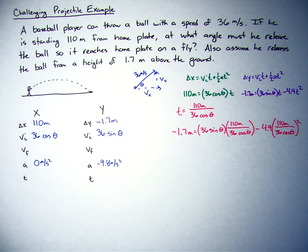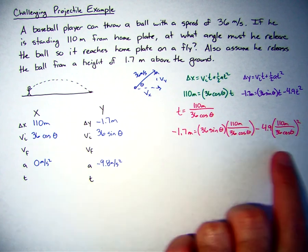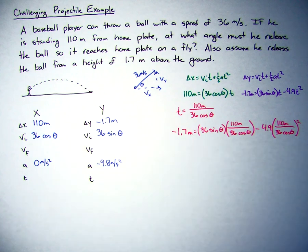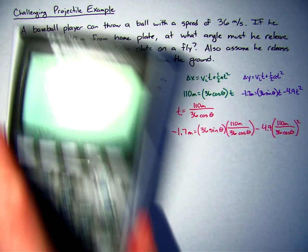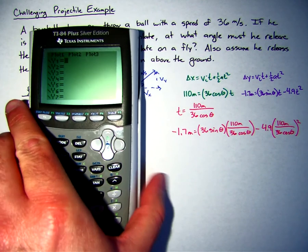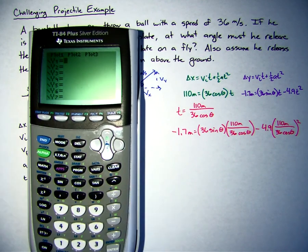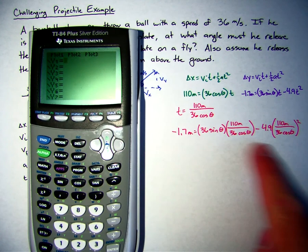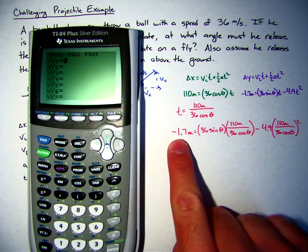So this is the equation that I have, and now I have just one unknown, which is theta. In order to solve this mathematically, it's going to require some different trig substitutions. And I know most of you haven't really done the trig substitutions at this point in pre-calculus. So instead of showing you mathematically how to solve this, I'm going to show you how to do this on a calculator because it's just like some of the previous examples. We have basically one equation here with an unknown.